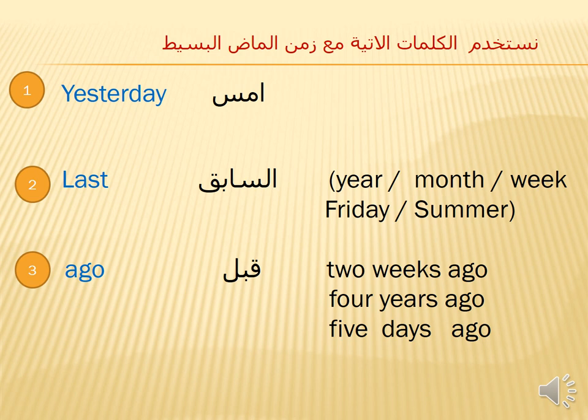We use the following words with the past simple tense: yesterday, last — last year, last month, last week, last Friday, last summer, last night, last April, last October. Also 'ago', which is used at the end of the sentence — for example: two weeks ago, four years ago, five days ago. 'Ago' means قبل.